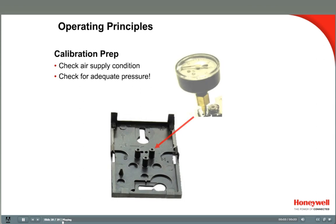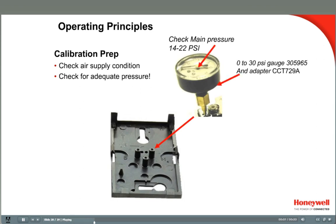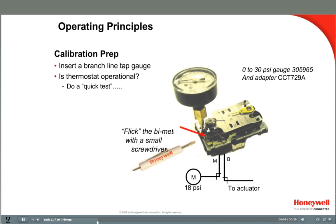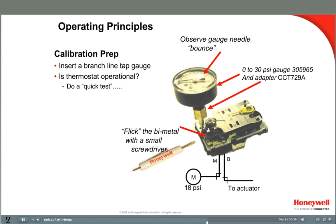Before you calibrate, make sure you're getting enough air to the stat. The recommended main air pressure is usually 17 to 22 pounds and almost always needs to be at least 14 pounds. Check main air pressure by removing the stat from the wall and inserting a branch tap gauge into the main air port on the exposed back plate — it's marked with an M. If the main air pressure is low, check for air leaks, crimped tubing, dirty filters, or an incorrectly set pressure-reducing valve. Also make sure the stat is operational — give the bimetal a couple of quick flicks to see if the branch line tap gauge needle bounces.